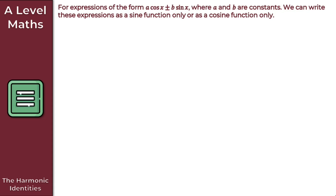In this video, we're going to take a look at the harmonic identities. For expressions of the form a·cos(x) ± b·sin(x), where a and b are constants, we can write these expressions as a sine function only or as a cosine function only. We do this using something called the harmonic identities, sometimes known as the r formulae.